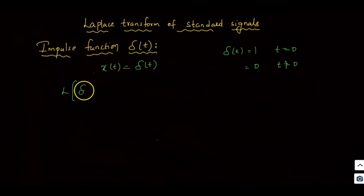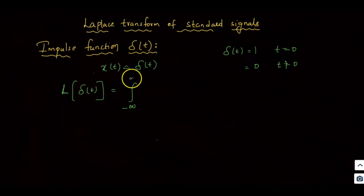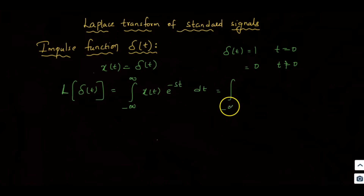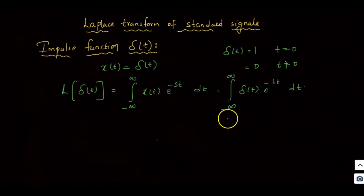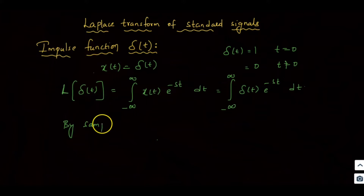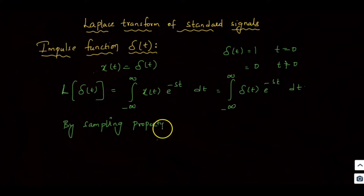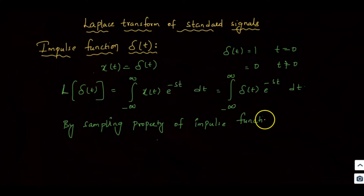Now we will find the Laplace transform of δ(t). The Laplace transform of δ(t) is equal to the integral from minus infinity to infinity of x(t) times e^(−st) dt. Substituting x(t) = δ(t), we get the integral of δ(t) times e^(−st) dt. We will use the sampling property of the impulse function.